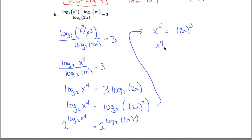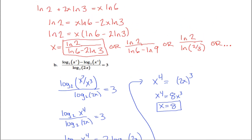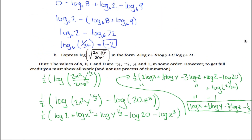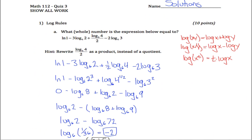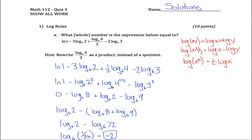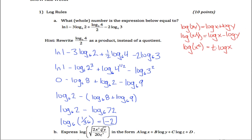Expanding (2x) cubed: distribute the three to each factor to get 8x cubed. Then x to the fourth equals 8x cubed. Divide both sides by x cubed and you get x equals 8 — that's the solution. A pretty challenging quiz, but if this makes sense after the fact, that's good. Similar problems will appear on the midterm so you can make up any points you may not have gotten on the quiz.